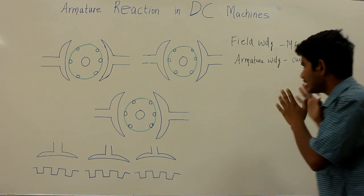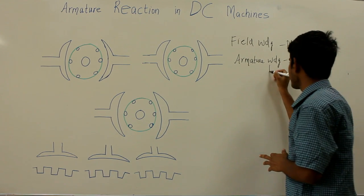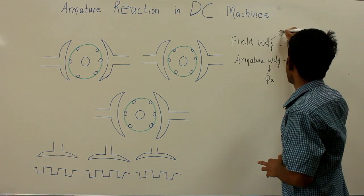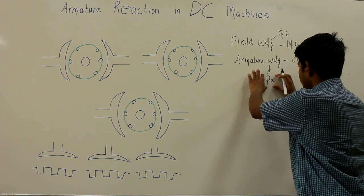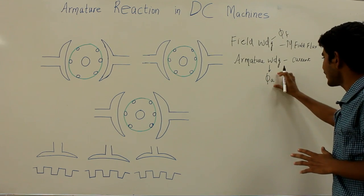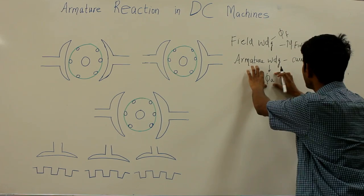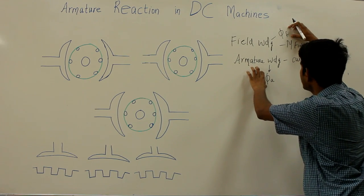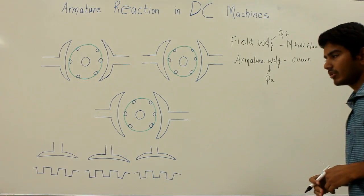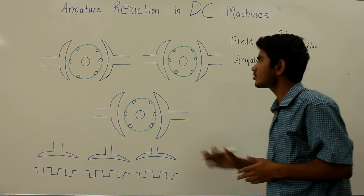But what happens is when the armature winding carries the current, it produces armature flux — let me indicate this as phi_a — and the field flux as phi_f. This armature flux has some effect on the field flux, which is what we refer to as armature reaction in DC machines.